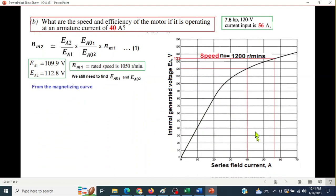All these are known. We need to find EA1 and EA2 from the graph. Now this is the graph. The first one, that is EA01, we'll find from 56 ampere. Look at this graph. This is, I guess, 56 ampere, and where it cuts the EA is 133 volts, so EA01 is 133 volts. Similarly, for the second case, that is 40 ampere, the EA02 is 120 volts.